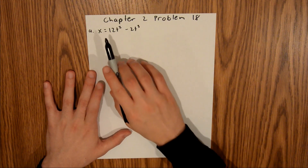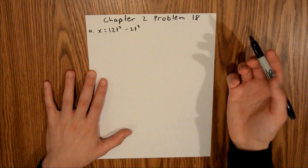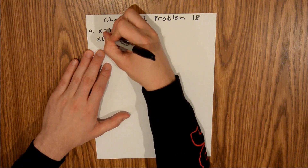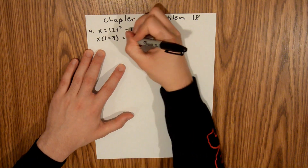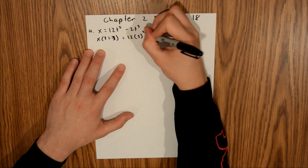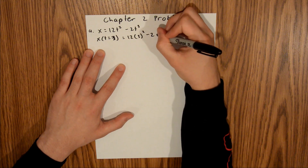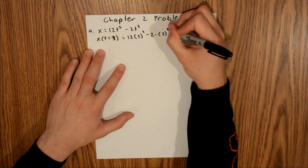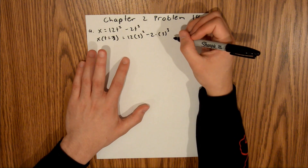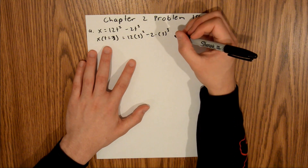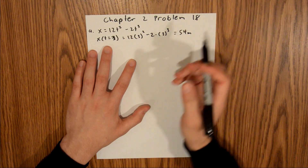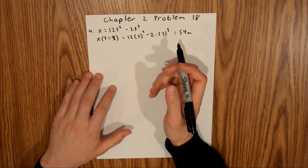We need to evaluate x at t equals 3. So x of t equals 3 is equal to 12 times 3 squared minus 2 times 3 to the third. If you plug that into your calculator, you will find that this is equal to 54 meters. And that's all you have to do for part A.